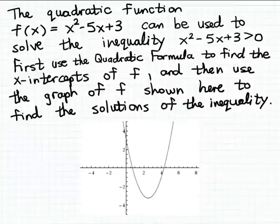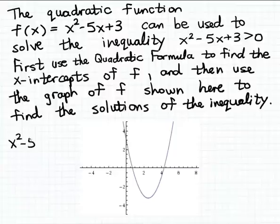Here's our second example of using the graph of a function to solve a quadratic inequality. So here's the inequality that we want to solve: x squared minus 5x plus 3 greater than 0. One side of this inequality is already 0, and that being the case, we can immediately think of the left-hand side of this inequality as the formula for a function.